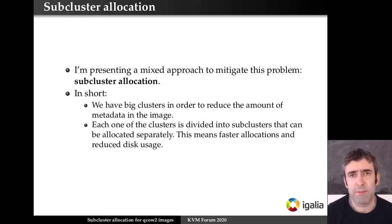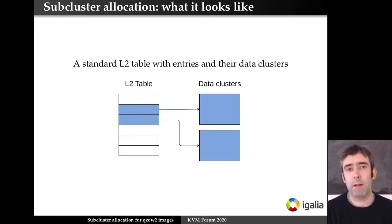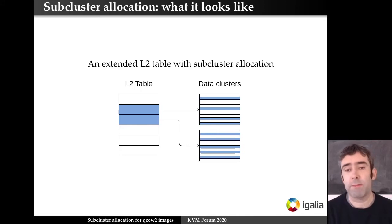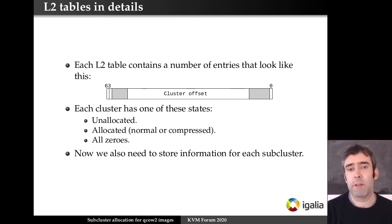The solution I'm describing is called sub-cluster allocation. The basic idea is that we have big clusters to reduce the amount of metadata, but each one is divided into sub-clusters that can be allocated separately, giving us faster allocations and less disk usage. A normal L2 table has data clusters; with sub-clusters, each data cluster is divided into 32 sub-clusters of the same size that are allocated separately. Internally, the L2 table entry contains the cluster offset plus bits indicating whether the cluster is allocated, compressed, or contains zeros — the 'contains zeros' feature means QEMU can return zeros without doing I/O.